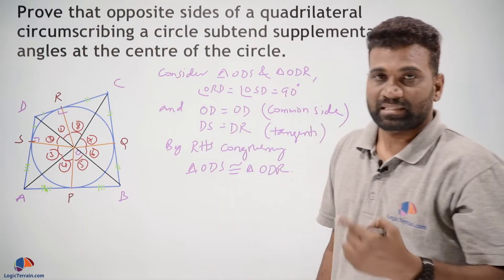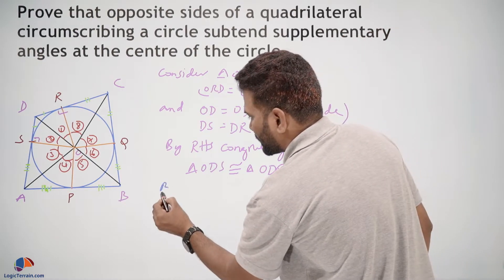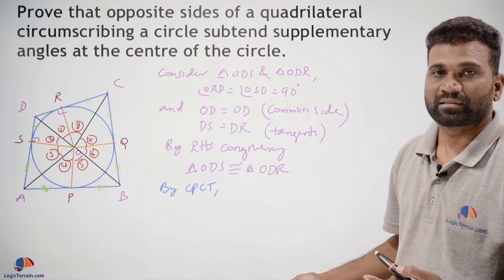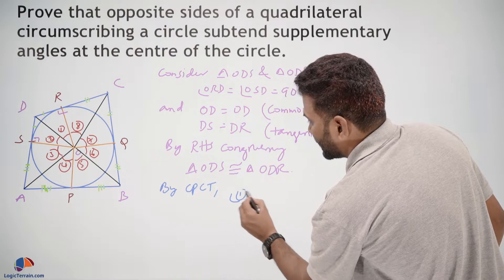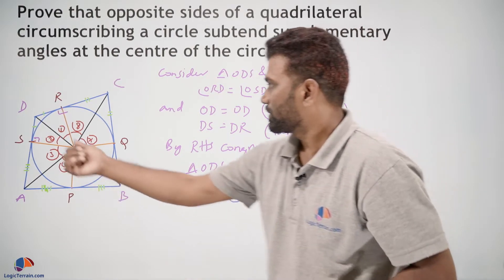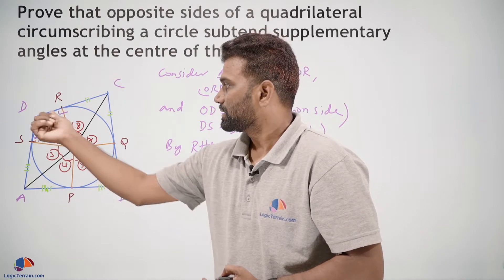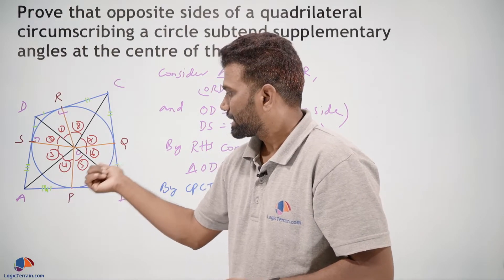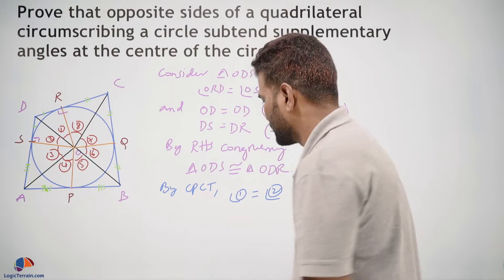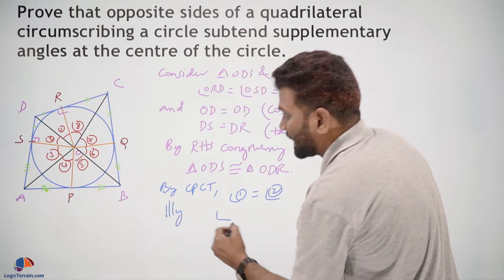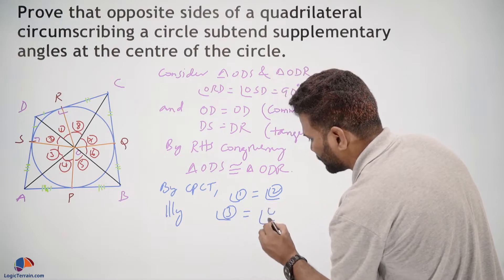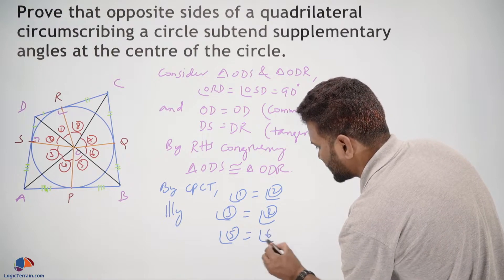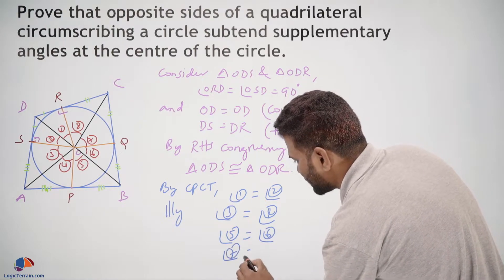Since the two triangles are congruent, by CPCT — corresponding parts of congruent triangles are equal — we can say angle 1 equals angle 2. Similarly, for the other pairs of triangles, angle 3 equals angle 4, angle 5 equals angle 6, and angle 7 equals angle 8.